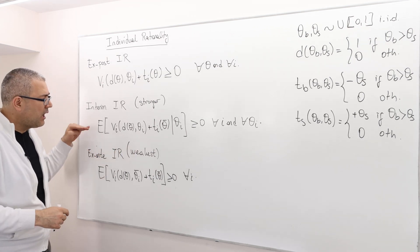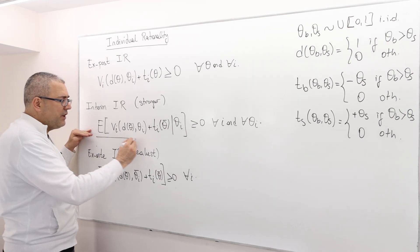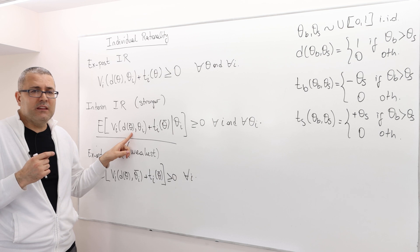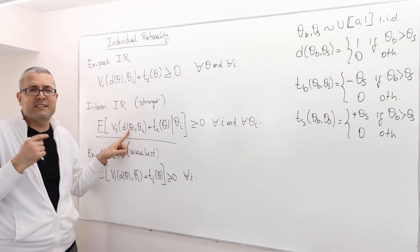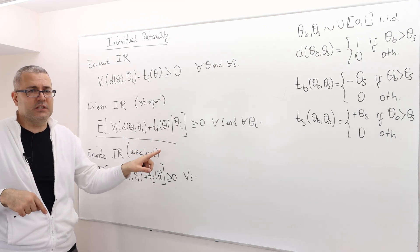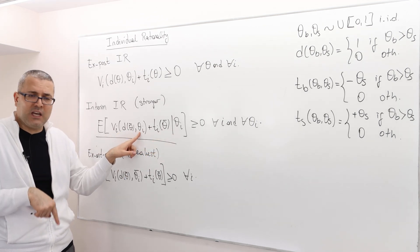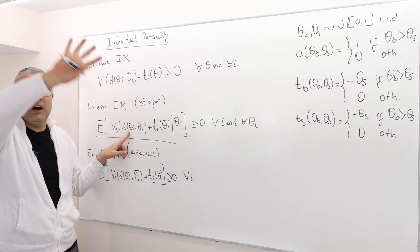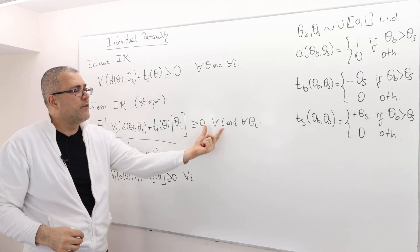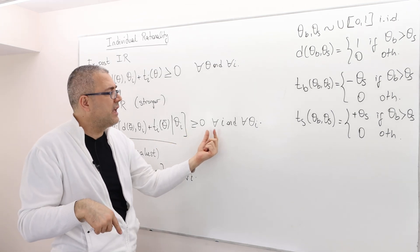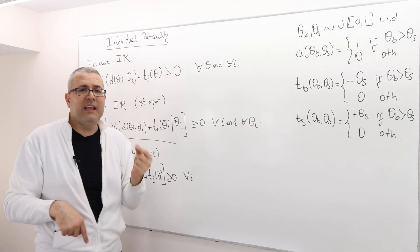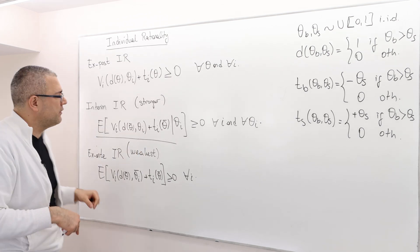How do we formally define interim IR? We take the expectation over utilities, but this time the only random variable is the opponent's types θ̄. Player i knows his own type θ_i — it's the realization — but takes the others' types as random variables. If this expectation is positive for every agent i and for every realization of θ_i, we say the mechanism is interim individual rational.